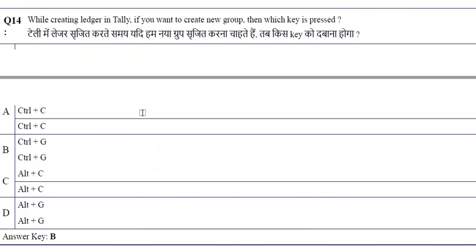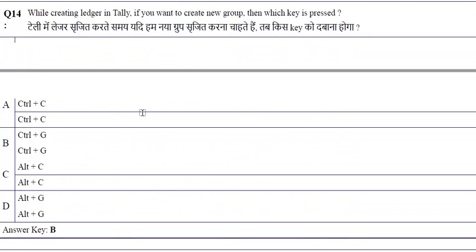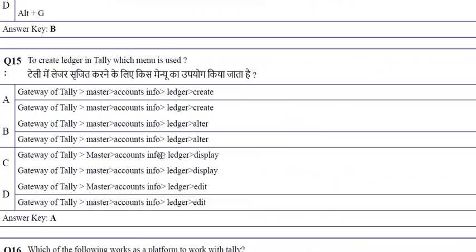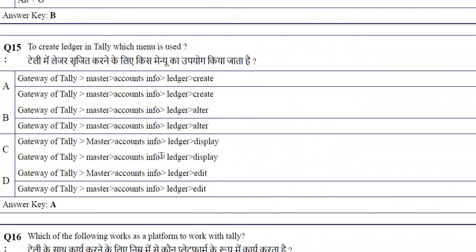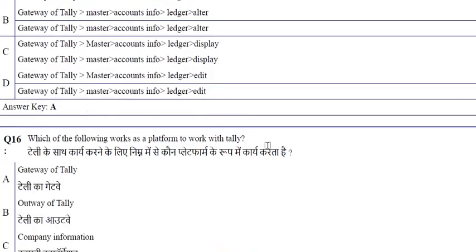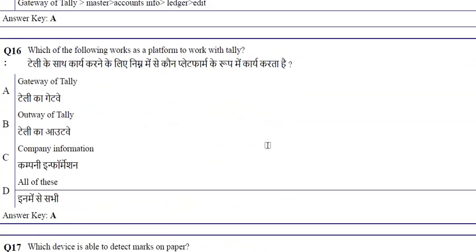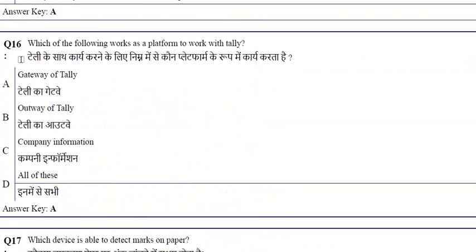While creating a ledger in Tally, if you want to create a new group, the key used is Control + G. To create a ledger in Tally, the menu path is: Gateway of Tally → Masters → Accounts Info → Ledger → Create. The gateway of Tally works as the platform to work with Tally.